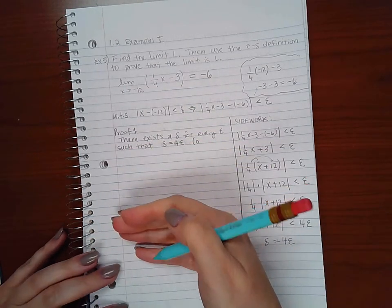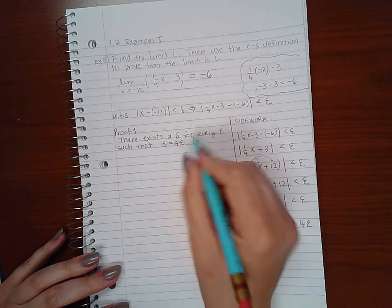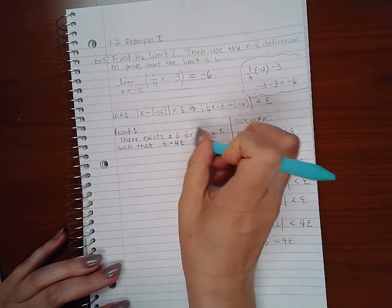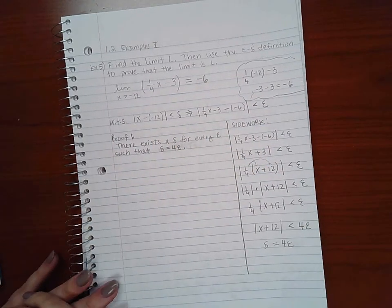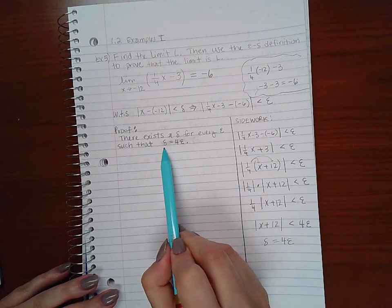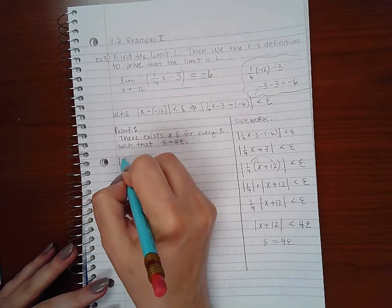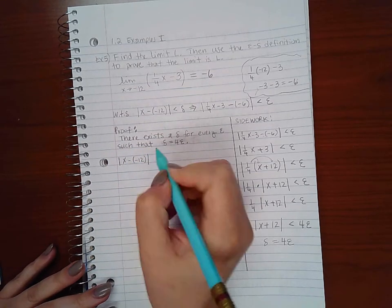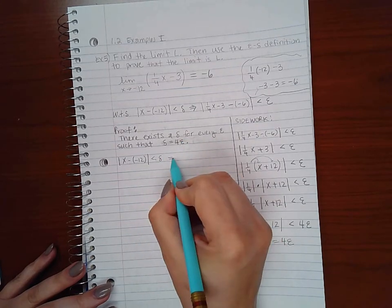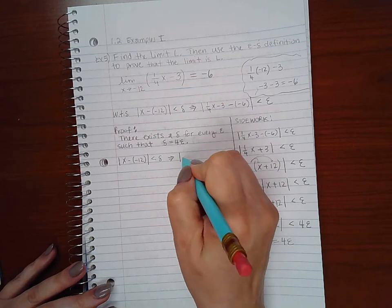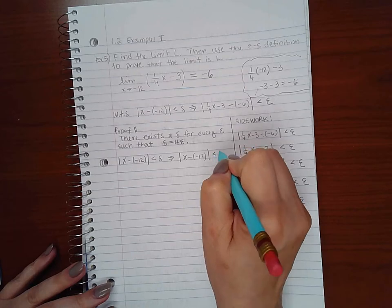I think I don't need to worry about the other statement, so I'm done there. There exists a delta for every epsilon such that that delta will be four times each of those epsilons. I'm going to start off with my statement - this has to be less than delta. Since I found what that delta would be, I'm going to say this implies |x minus negative 12| is less than 4 epsilon.